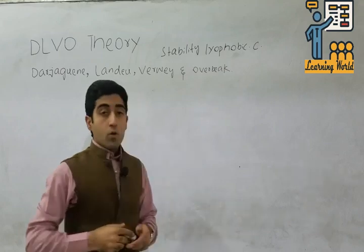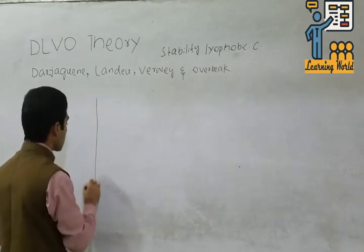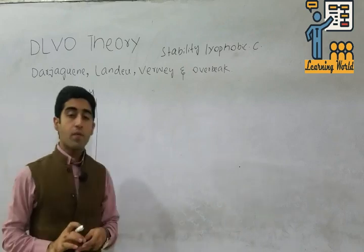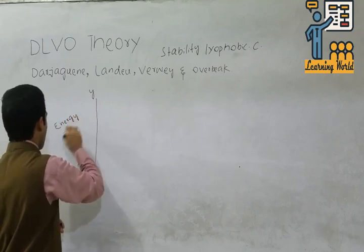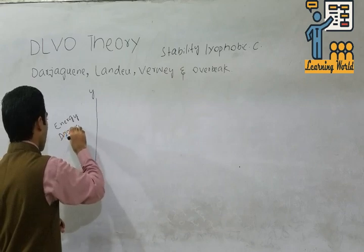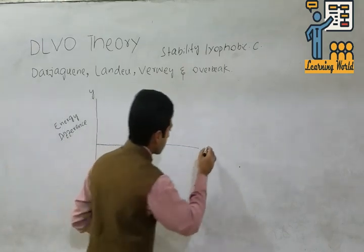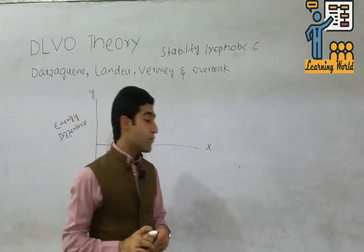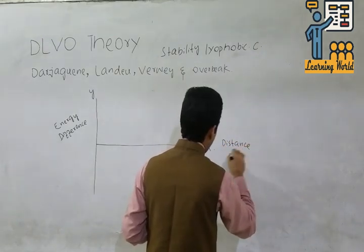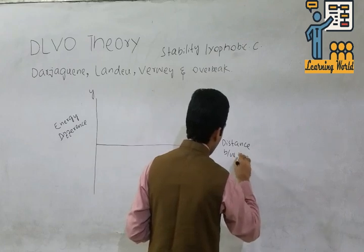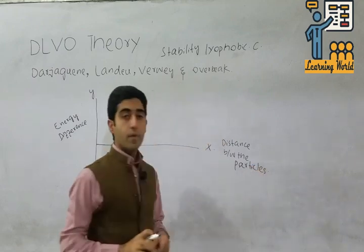We explain this theory with the help of a graph. First we draw the vertical line — this is the Y-axis. This vertical line represents the energy difference of the particle. We also draw the X-axis line, which represents the distance between the particles.